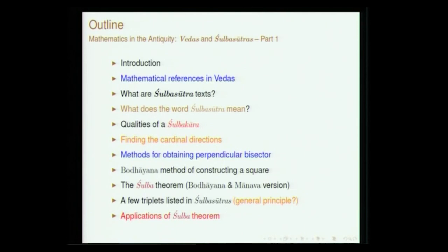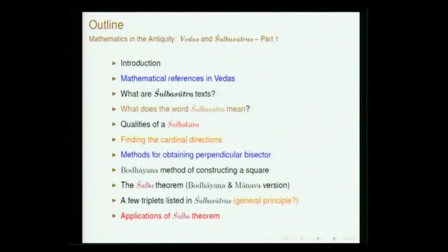We will also deal with the construction of certain geometrical objects: square, circle. Bodhayana's method of constructing a square may look simple, but they did not have T-squares or set squares. Bodhayana discusses an interesting method using only a couple of nails and a rope to construct a perfect square. Then we will move on to what is today called the Pythagorean theorem — we call it the Sulva Sutra or Sulva theorem — with different versions: Bodhayana's version, Manava's version. We will also see how triplets are listed in this ancient text.